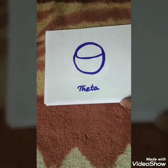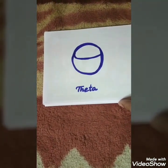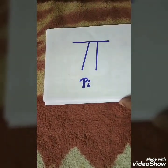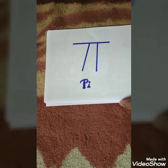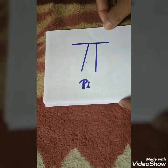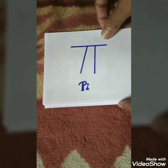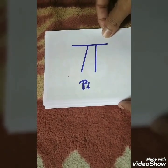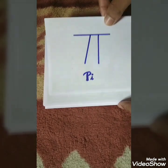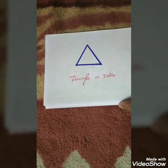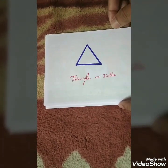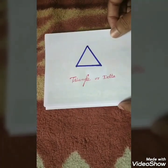Theta. Pi — the value is, as you know, 22 by 7, or approximately 3.14. Triangle, or Delta.